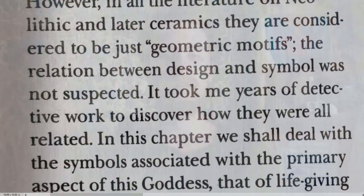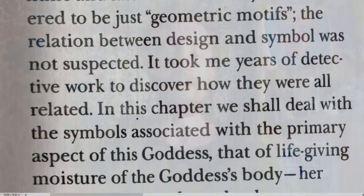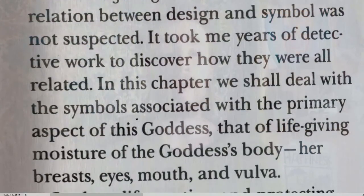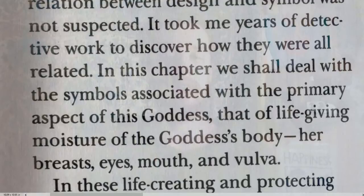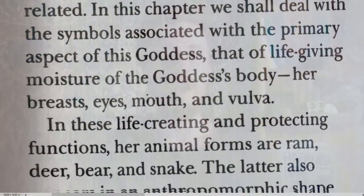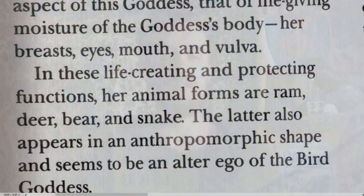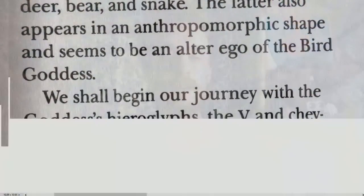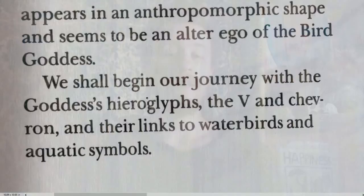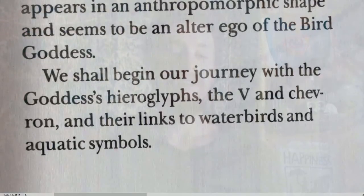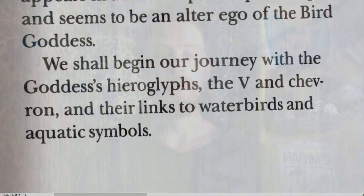The relation between design and symbol was not suspected; it took years of detective work to discover how they were all related. In this chapter we shall deal with symbols associated with the primary aspect of the goddess — that of life-giving moisture — and her body: breasts, eyes, mouth, and vulva. Her animal forms are the ram, deer, bear, and snake. We shall begin with the goddess's hieroglyphs, the V and chevron, and their links to water birds and aquatic symbols.